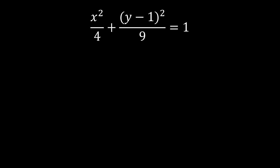For the next example, we have x squared over 4 plus y minus 1 squared over 9, equal to 1. We will transform this into general form. Since we have denominators of 4 and 9, we multiply all terms by both denominators — this follows the concept of solving rational equations by finding the LCD. For a quicker approach, we multiply every term by 4 times 9.